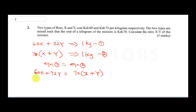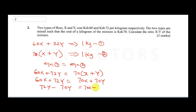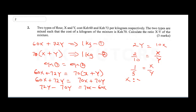Expanding the right side: 60x + 72y = 70x + 70y. Collecting like terms: 72y − 70y = 70x − 60x, giving 2y = 10x. So x/y = 2/10 = 1/5. Therefore the ratio x : y = 1 : 5. That takes us to question 3.